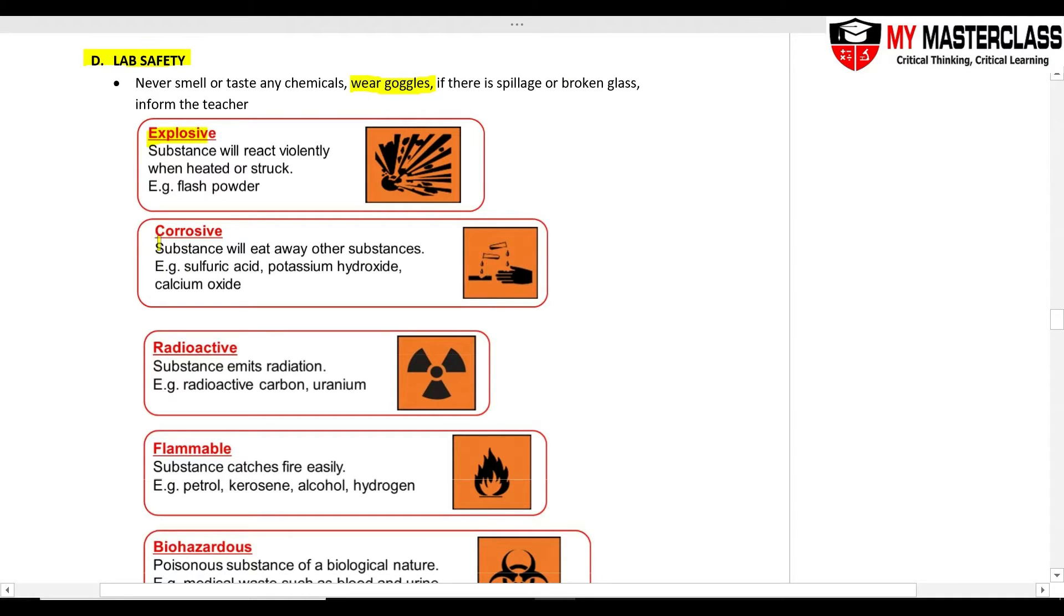Second one is corrosive. So substances that will corrupt your hand, you can see it's burning. Examples are your acids.